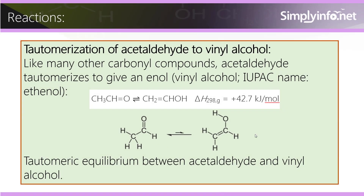Reaction — Tautomerization. Tautomerization of acetaldehyde to vinyl alcohol: like many other carbonyl compounds, acetaldehyde tautomerizes to give an enol, vinyl alcohol, IUPAC name ethanol. CH3CHO is in reversible equilibrium with CH2=CHOH. The enthalpy H298g is equal to +42.7 kJ per mole, representing the tautomeric equilibrium between acetaldehyde and vinyl alcohol.